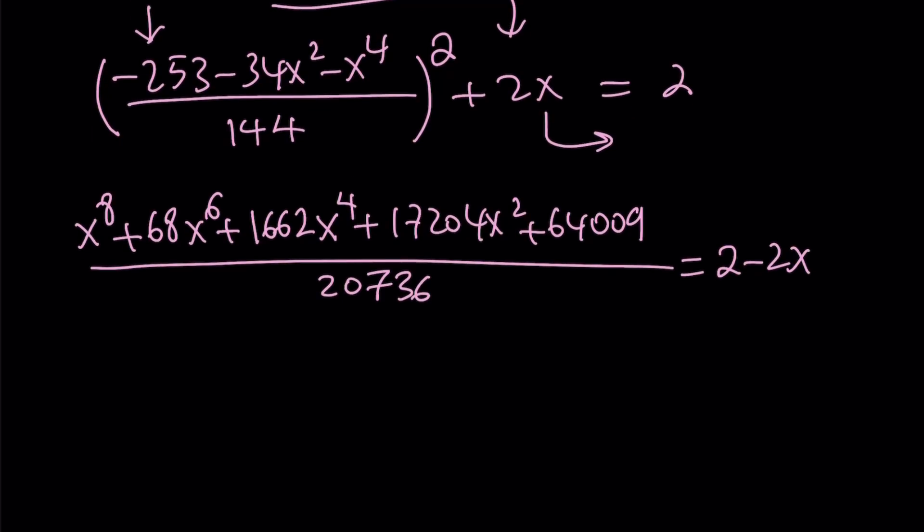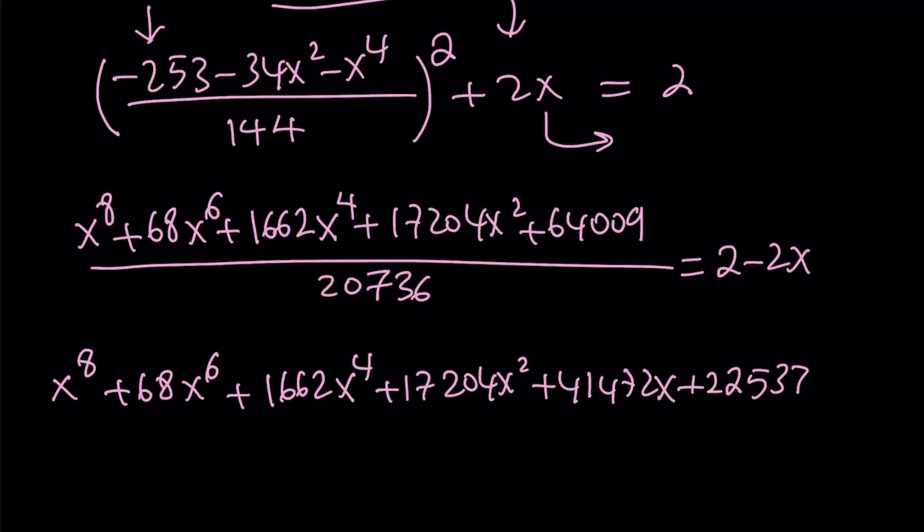Great. So when you distribute and arrange the terms, if I'm not mistaken, this is what you should be getting: x to the 8th power plus 68x to the 6th power plus 1,662x to the 4th power plus 17,204x squared plus 41,472x plus 22,537, and the whole thing is equal to 0.